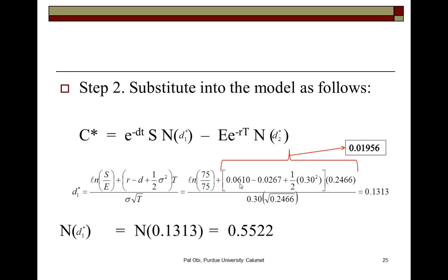Within the call option pricing model, we define it as: the continuous discounting factor multiplied by S times N(D1), minus the present value of the exercise price multiplied by N(D2). In calculating D1*, we now have to include the dividend yield. The adjustment is R — the continuous interest rate — minus D, the dividend yield. So as you can see, the dividend yield reduces the rate of return associated with this option.